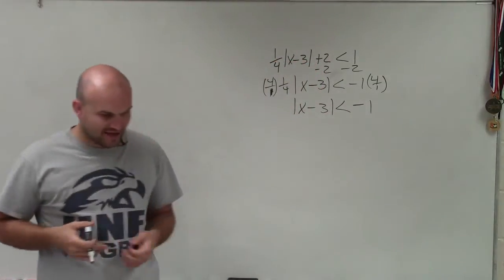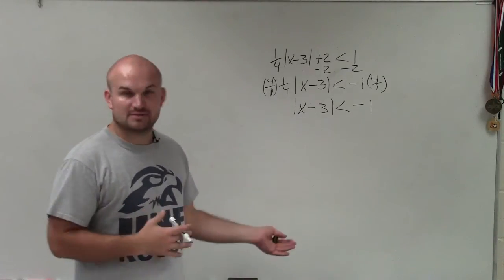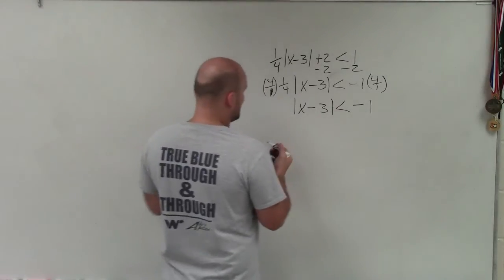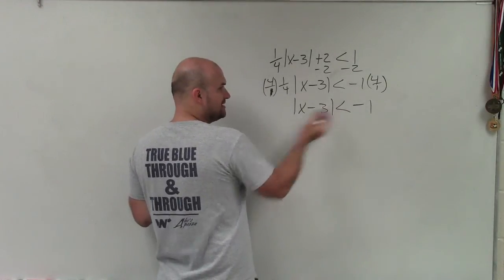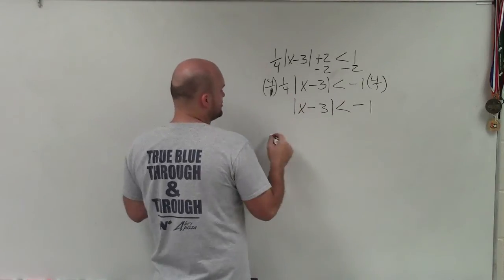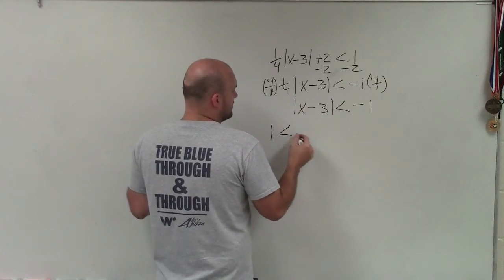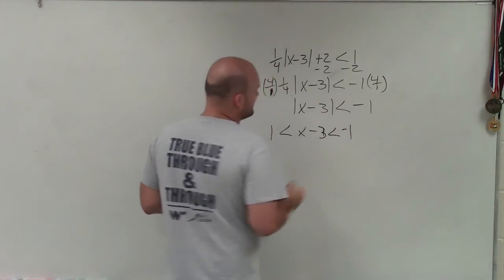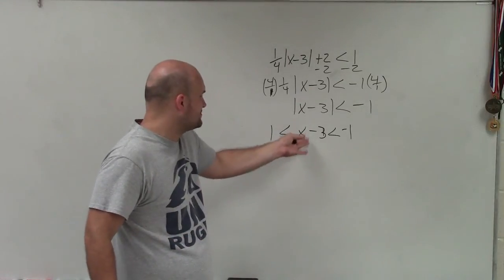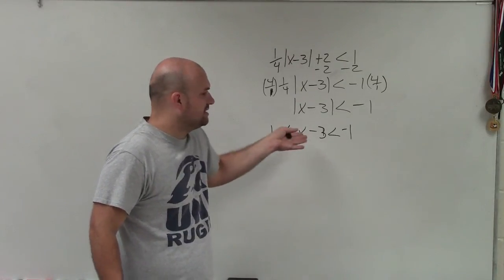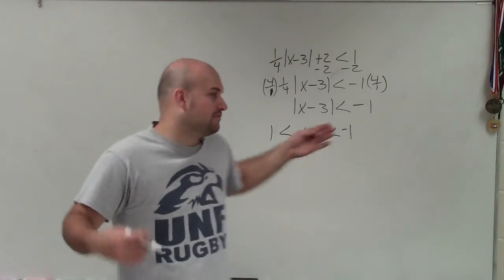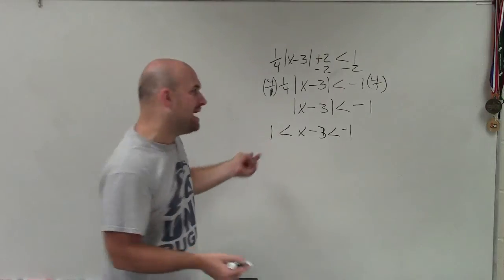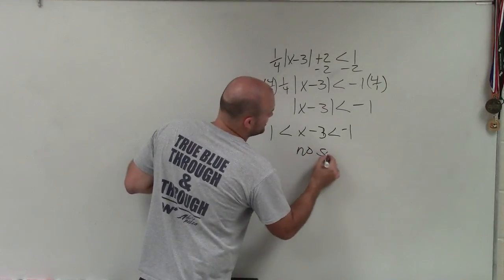Now, when creating my absolute value inequality, I need to use a compound inequality — a compound with 'and.' Usually we do the positive and the negative. Well, this is already negative. What if it's positive? If we make it negative and positive, we see this just doesn't make sense. How can x minus 3 be larger than 1 but less than negative 1? Remember, when it's less than, it's an 'and,' so it has to be true for both. Well, this is impossible. Therefore, this is no solution.